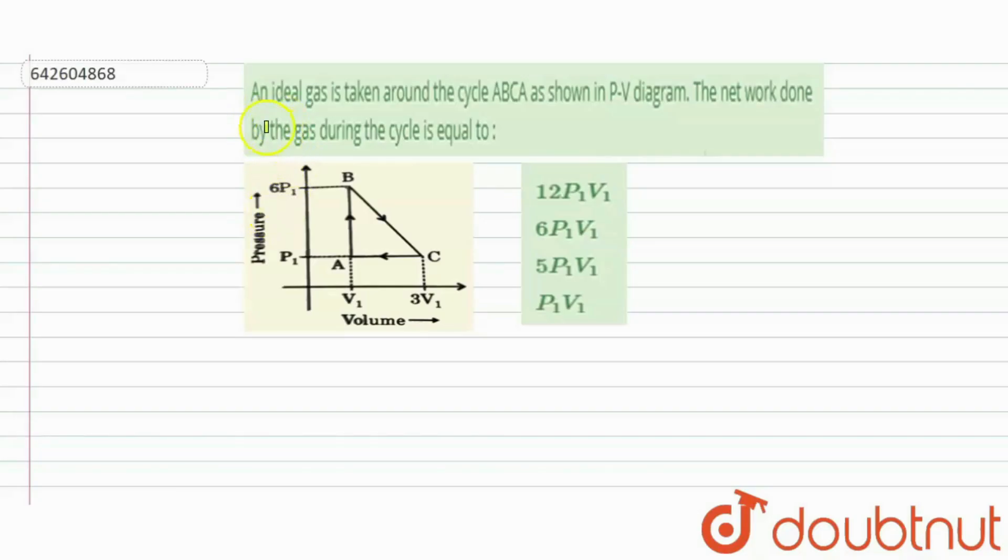Hi everyone, let's take a question. Here the question says, an ideal gas is taken around the cycle A, B, C, A as shown in the figure PV diagram. The net work done by the gas during the cycle is equal to.